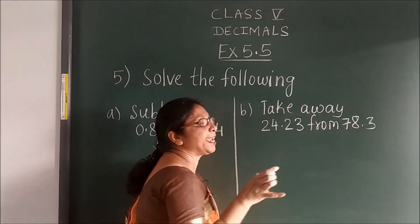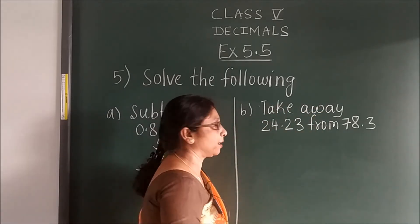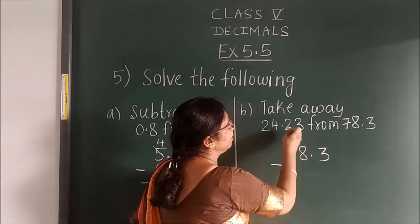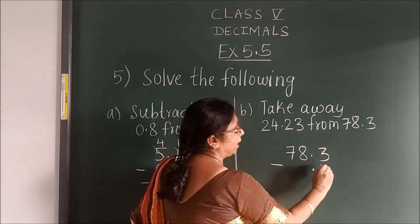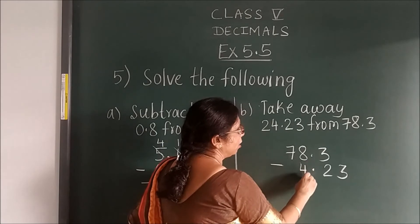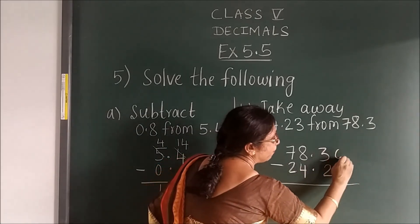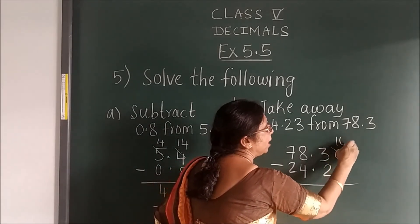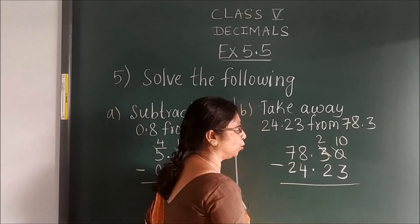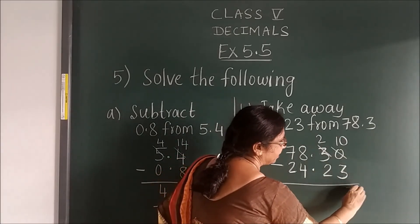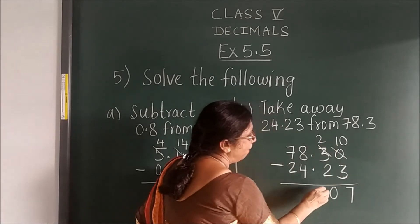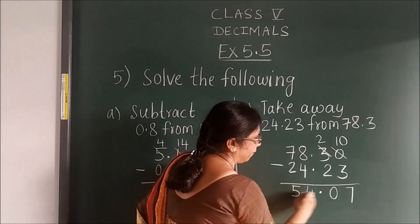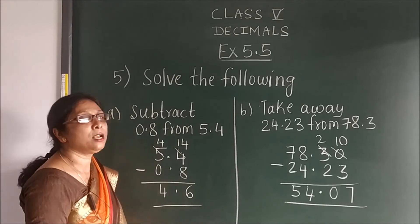Here also — take away means subtract. 'From' is there, so write the 'from' number first. Subtract sign, then below point you put point. Then 2, 3. And 4, 2. Where there is no number, put 0. Now subtract: from 0, 3 goes no — borrow. This becomes 10, this becomes 2. 10 minus 3 is 7. 2 minus 2 is 0. Place the point here. 8 minus 4 is 4. 7 minus 2 is 5. In this way you can carry out the subtraction.